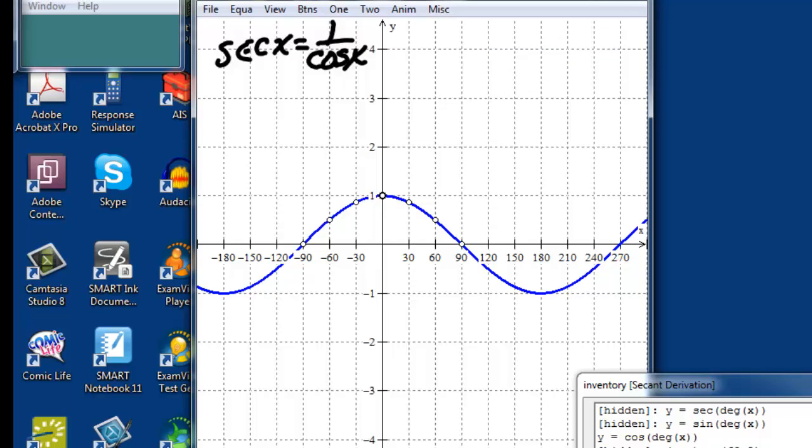If we think about what's happening at 60 degrees, I like the cosine of 60 because the cosine of 60 is 1 half, and its reciprocal would be 2.